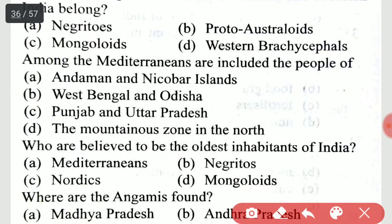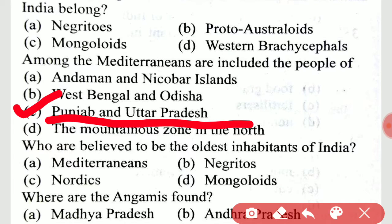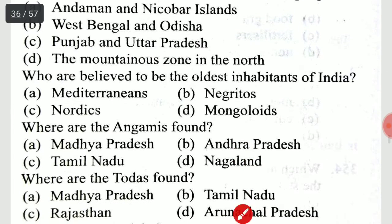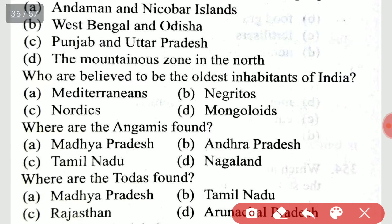Among the Mediterranean race are included the people of Punjab and Uttar Pradesh. Who are believed to be the oldest inhabitants of India? Negritos are the oldest inhabitants of India.